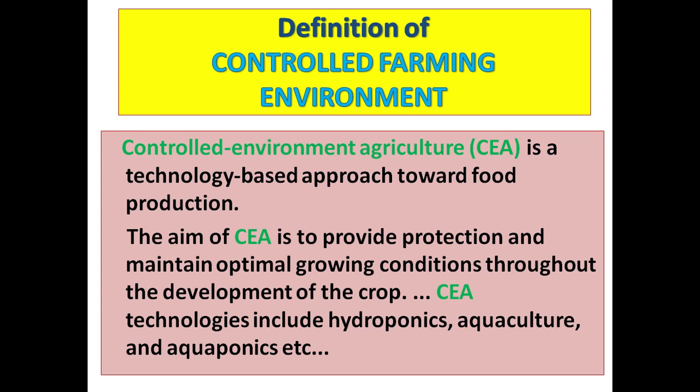Definition of controlled environment agriculture (CEA): CEA is a technology-based approach towards food production. The aim of CEA is to provide protection and maintain optimal growing conditions throughout the development of the crop. CEA technologies include hydroponics, aquaculture, and aquaponics, etc. Basically, technology is applied in these methods to help improve production of crops or the farm in general.